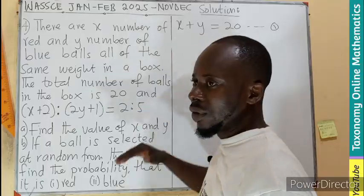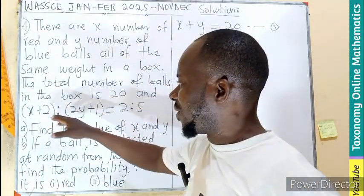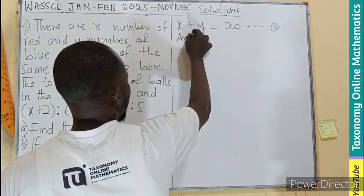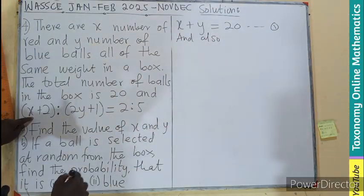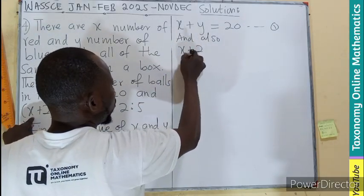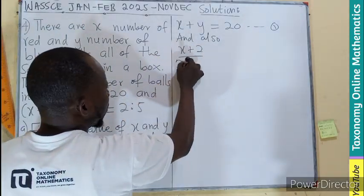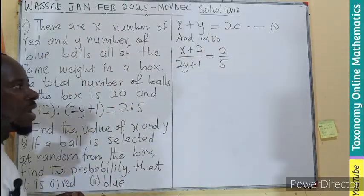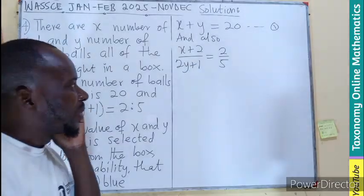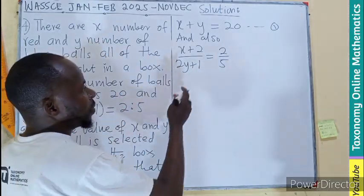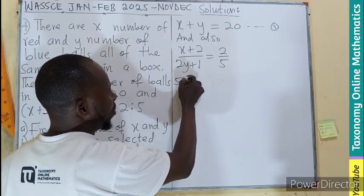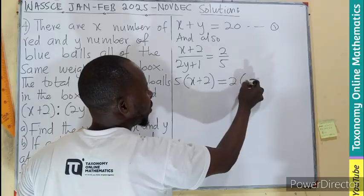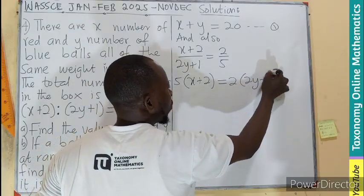Then let's come to the ratio. The ratio simply means this divided by this. So we can also say the first term, X plus 2, divided by the second term, 2Y plus 1, should give us 2 to 5. You know ratios are also fractions. Now we can cross multiply, whereby 5 is multiplying X plus 2, and that equals 2 multiplying 2Y plus 1.